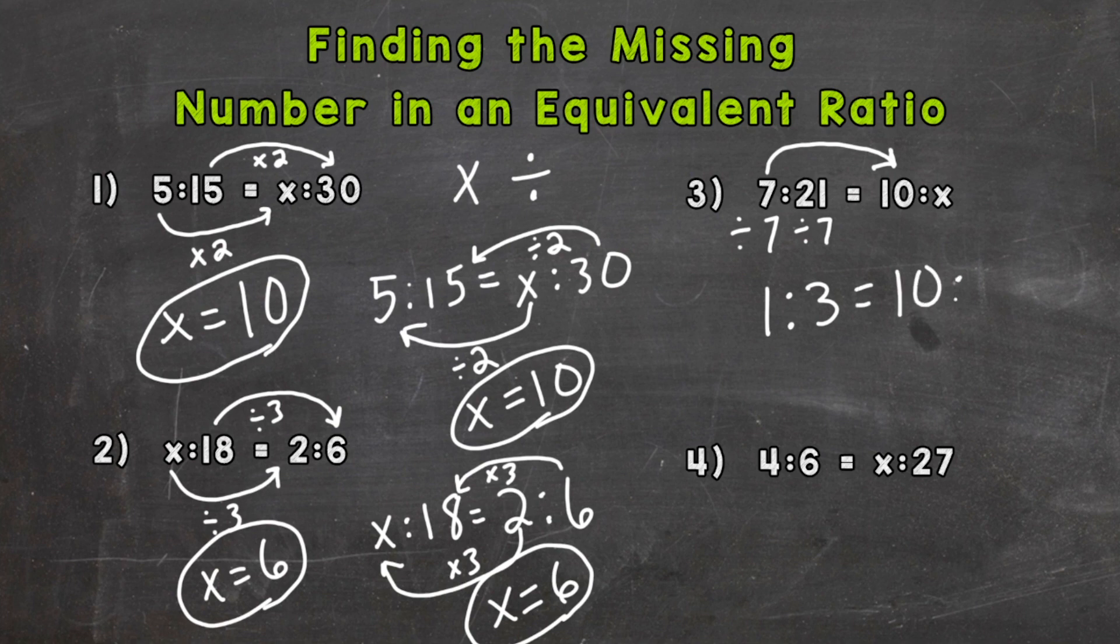Now let's put our right side in, and this is going to be much easier. How do I get 1 to equal 10? I can multiply by 10. Let's do that to the 3 as well. 3 times 10 gives us an answer of 30, so x equals 30.